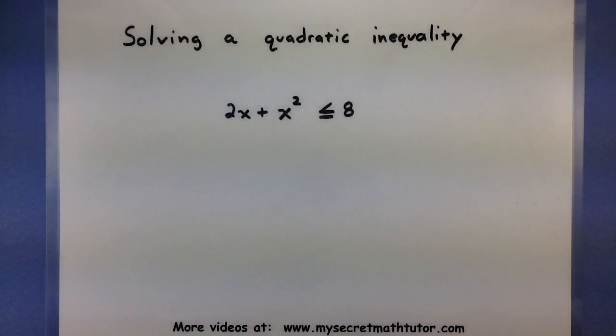So the example we're going to go over is 2x plus x squared is less than or equal to 8. Here are some of the first things that you want to do with an inequality like this. First, go ahead and get everything over to one side, and arrange things in descending order.